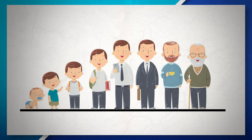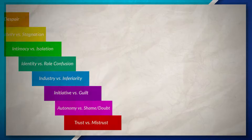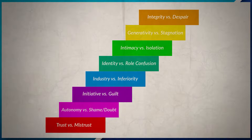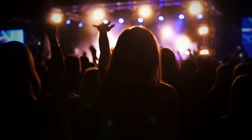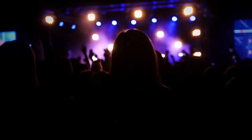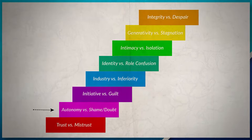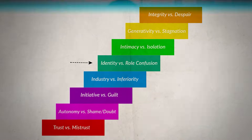Erikson identified eight stages of development that people go through during their life. Each stage is categorized by different needs, conflicts, and life events. As individuals progress through the different stages, they continue to be influenced by the previous stages.